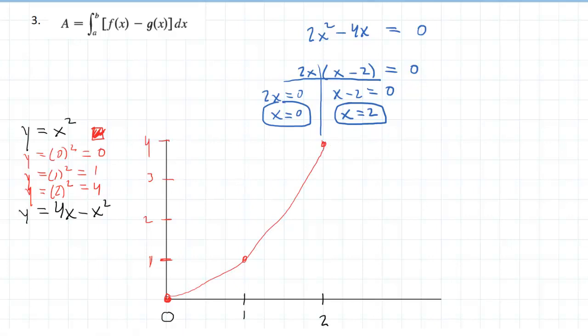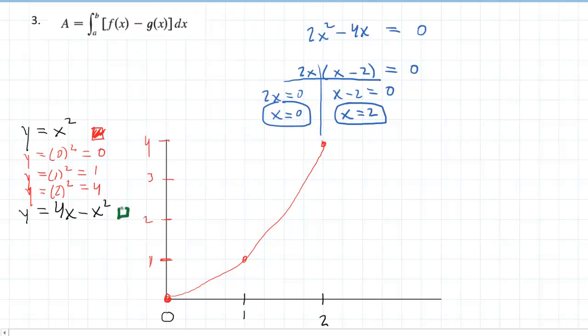And then I will use a different color for the next one. Maybe we'll call this one green. We'll plug in the same values of x. So we'll start with 0. So we're going to have 4 times 0 minus 0 squared. All of that is equal to 0. So the green point also sits at 0, 0.